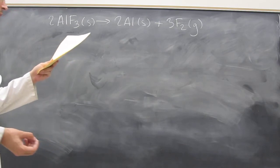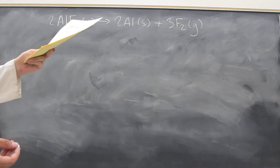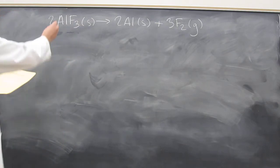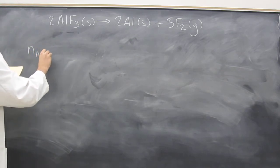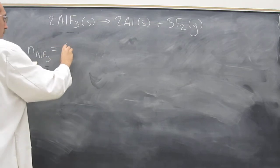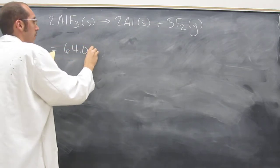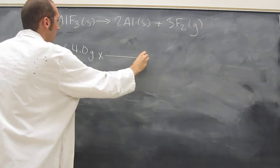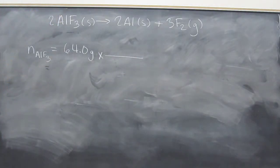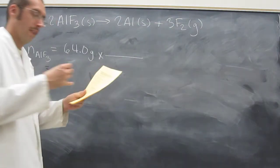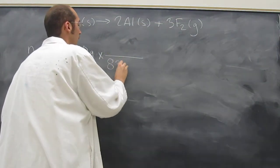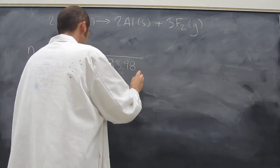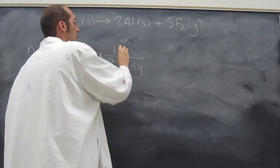It says if 64 grams of aluminum fluoride react, how many moles of fluorine will be gone? So aluminum fluoride, 64 grams. So the number of moles of aluminum fluoride is going to be 64.0 grams, and then you're going to multiply that by the inverse of the molar mass of aluminum fluoride. And thank goodness it's all added up for me. 83.98 grams per one mole.